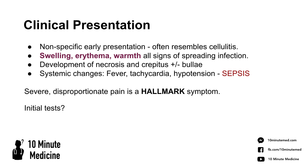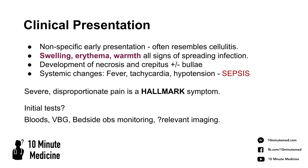So what initial tests can you do? You want to get a set of bloods — ideally a full blood count, LFTs, U&Es, a clotting screen, and a CRP. You can also get a bone profile in an older patient, as it will still give you their calcium level.